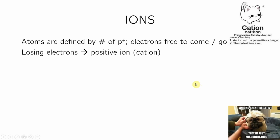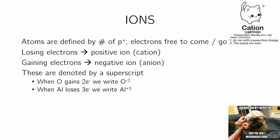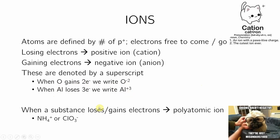When you lose an electron, you become a positive ion, known as a cation. When you gain an electron, you're a negative ion, or an anion. This is noted by superscript. When O gains two electrons, it becomes O minus two. When aluminum loses three electrons, it becomes Al plus three. When a substance loses or gains electrons, it becomes a polyatomic ion — a whole thing can have a charge. Make sure you understand: when you gain an electron you become negative, and when you lose electrons you become positive. We'll do an example in a bit.